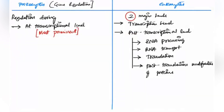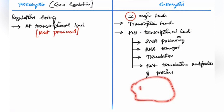Before going into gene regulation, let's discuss the major difference between prokaryotic and eukaryotic gene regulation. In prokaryotes, regulation is mainly and most prominently at the transcriptional level. In eukaryotes, regulation may occur at the transcription level or post-transcription level, which includes during RNA processing.